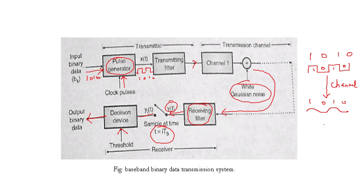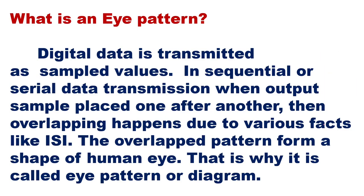Inter-symbol interference is the phenomenon in a communication system where data is transmitted as pulses and the output at the receiver due to other bits or symbols interferes with the output produced by the desired bit. There is influence from adjacent bits, and this effect is called ISI. It is an error detected at the receiver, and to study it we use the eye pattern.